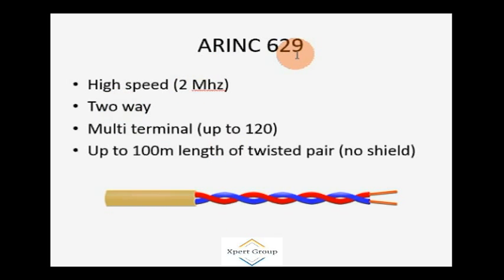After ARINC 429, we have different modules of the ARINC series, including ARINC 629. This is a very high-speed data cable used in aircraft construction. The data rate of ARINC 629 is 2 megahertz, much higher compared to ARINC 429 which has a high rate of 100 kilobits. The data is two-way in ARINC 629. Multi-terminals means you can use up to 120 terminals.